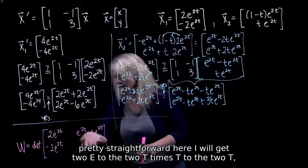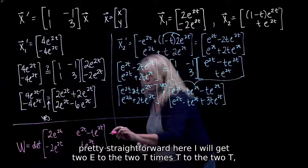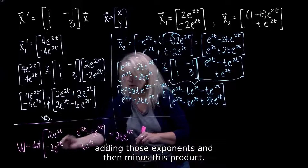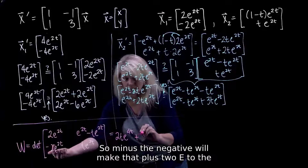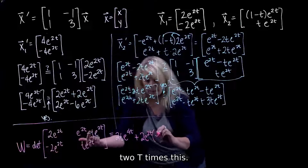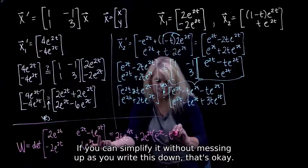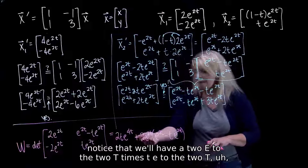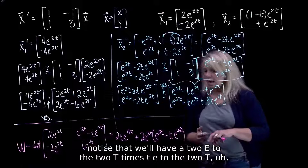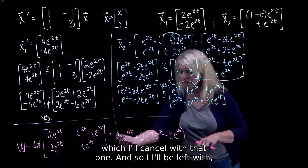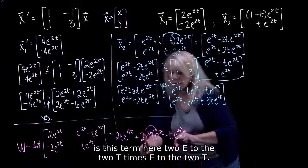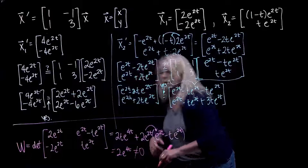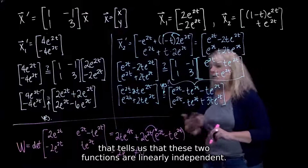The determinant of this 2 by 2 matrix: 2e to the 2t times t e to the 2t gives 2t e to the 4t, minus the product of the other diagonal. The negative makes that plus: 2e to the 2t times (e to the 2t minus t e to the 2t). Distributing through, the 2t e to the 4t terms cancel, leaving only 2e to the 2t times e to the 2t, which is 2e to the 4t — which is never zero. Because the determinant is not zero, x1 and x2 are linearly independent.